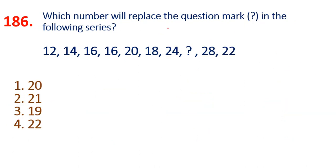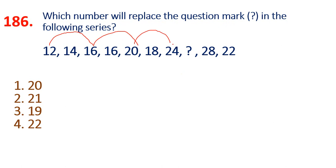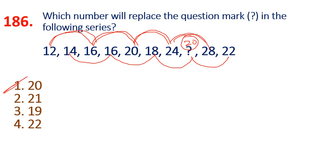186th question: 12 plus 4 is 16, plus 4 is 20, plus 4 is 24, plus 4 is 28. Then 14, 16 plus 2, plus 2, plus 2, plus 2. So 20 was in the question mark place. Option 1 is the answer. Very, very easy question.